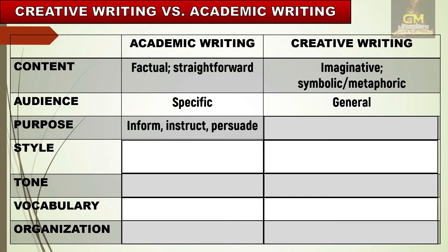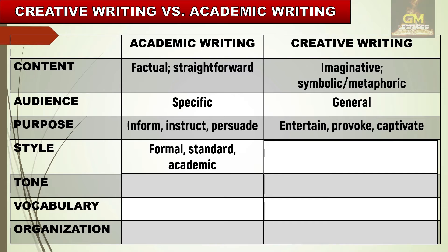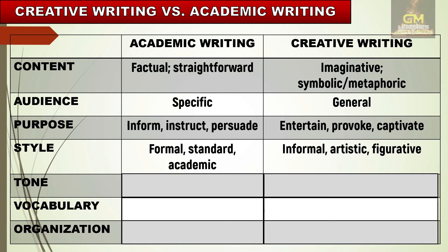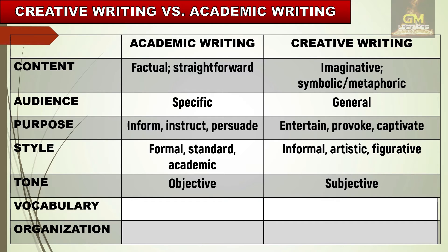In terms of purpose, academic writing is for the purpose of informing, instructing, or even persuading other people, while in creative writing it is mainly for entertaining, provoking ideas or thoughts, and to captivate the readers. In terms of writing style, academic writing style is formal, standard, and academic, whereas in creative writing it is informal, artistic, and figurative. The tone of academic writing is objective, while the tone of creative writing is subjective.